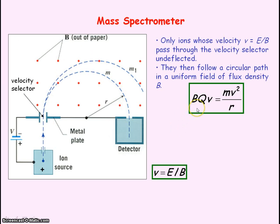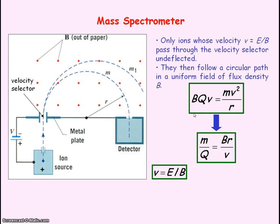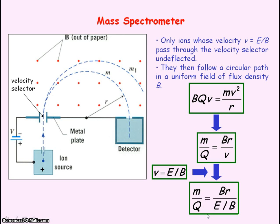So the magnetic force on the ions will equal the centripetal force. You can see there's one v common on both sides and so it can cancel. And if we rearrange the equation to make M divided by Q the subject, then that will equal B times R divided by v. If we substitute our equation for the velocity selector into here for v, then we get this, and we can tidy this up.